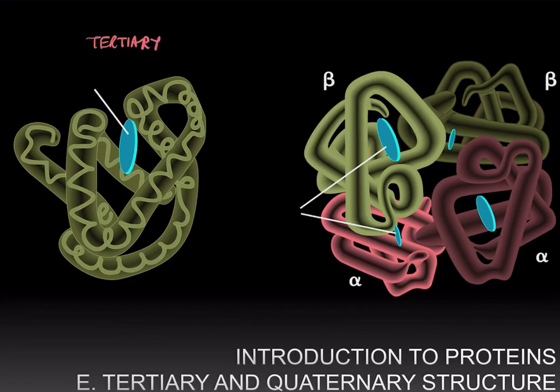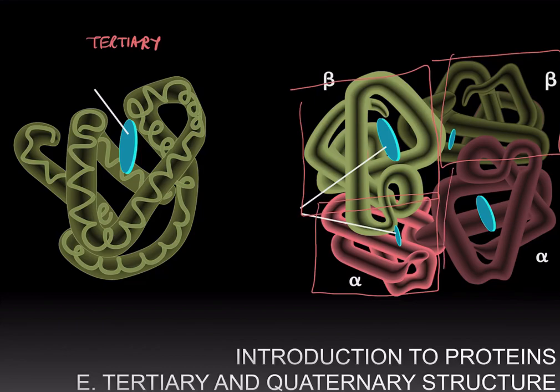Finally, multiple different polypeptides can come together to form a functional unit or functional protein, and this combination is known as the quaternary structure. For example, hemoglobin is made up of four different polypeptides. There's two of beta globins, and then two of the alpha globins.